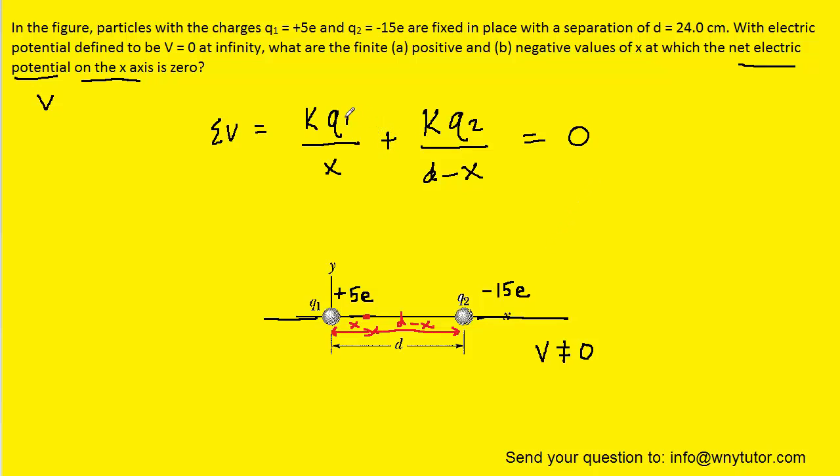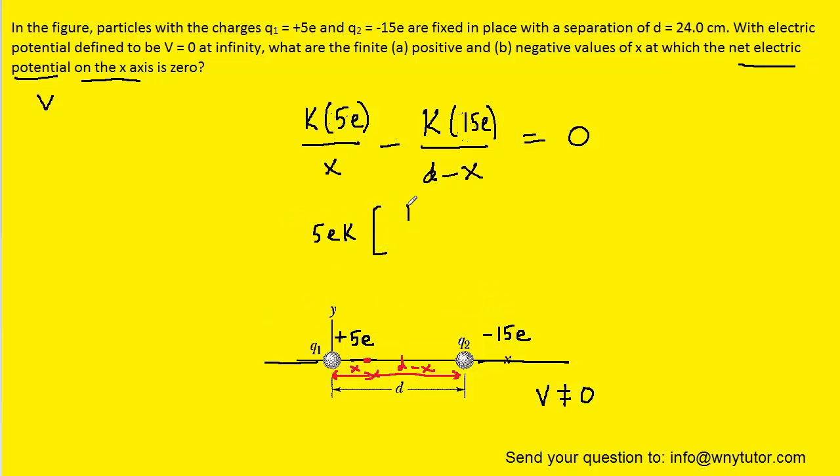We could then go ahead and fill in the respective charges. q1, again, was positive 5e. And q2 is actually negative 15e. So what we can actually do is change this plus sign to a minus, and then we'll substitute in 15e for q2. Next, we can factor out a greatest common factor from the numerators, which would be 5ek. So we'll factor that out. And that would leave us with 1 over x minus 3 over d minus x is equal to 0.